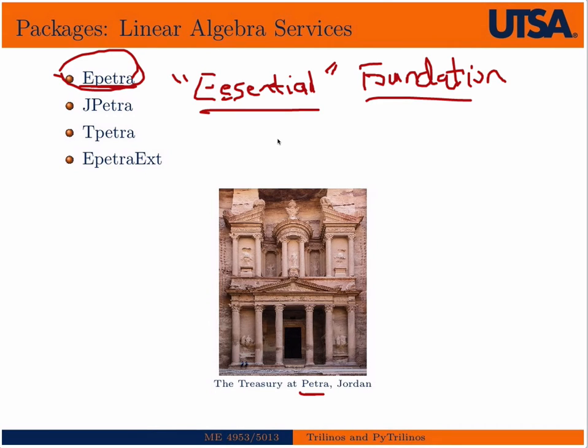JPetra is just another implementation of Epetra that is all in Java. The J is for Java. As I said on the last slide, most of Trilinos is written in C++, but not all of it. Tpetra is the next generation or templated Petra. Because Epetra, all of the data types are hard-coded to be of type double. Most of the data structures, the vectors for sure and the matrices, are hard-coded to be of type double.